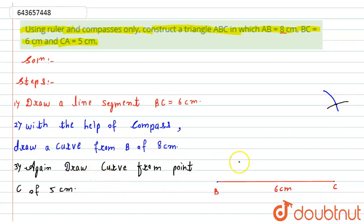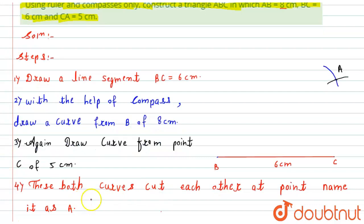Okay, now at whatever point they will intersect, that point I will mark as A. Okay, now here the next step. So in this step I have already completed that: this both curves cut each other at point, name it as A. So I have already given it, that's A.